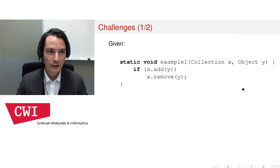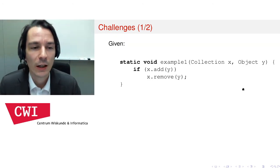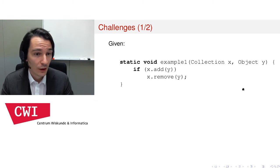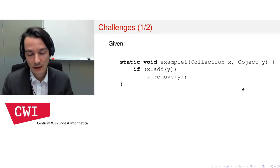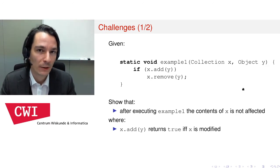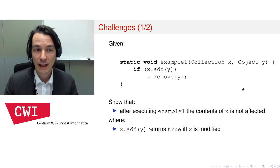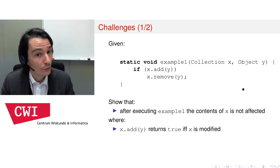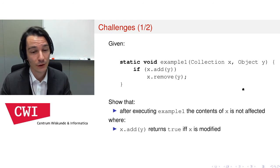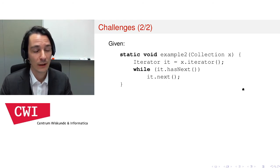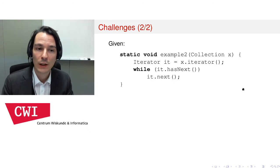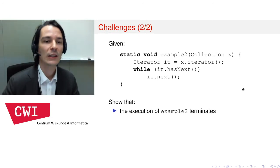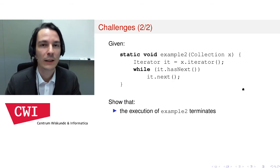To make matters more concrete, let's consider two challenges. The first: suppose you are given a collection and an object. If you add the object to the collection and that succeeds, and then you remove the same object, we expect the contents of the collection to be unaffected by these operations. Indeed, add returns true whenever the collection is modified; if add returns false, the collection wasn't modified, so we also expect the contents to be the same. The second challenge: how can we show that iterating over a collection terminates, i.e., that only finitely many steps are taken?